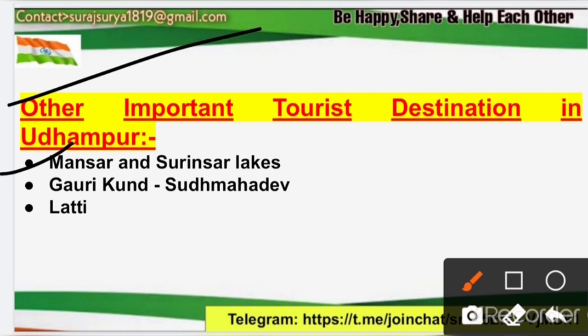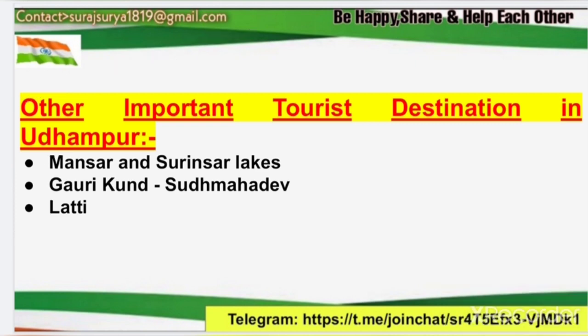I had earlier told you about Mansar and Surinsar Lakes in the important lakes section. Both are located approximately 64 kilometers from Jammu city. Surinsar Lake is approximately 42 kilometers away. These two lakes are also known as Twin Sister Lakes, or Twin Lakes. Gauri Kund, which is within Sudh Mahadev, is also an important tourist destination. Lathi is a village in Udhampur district that is also notable for tourism.